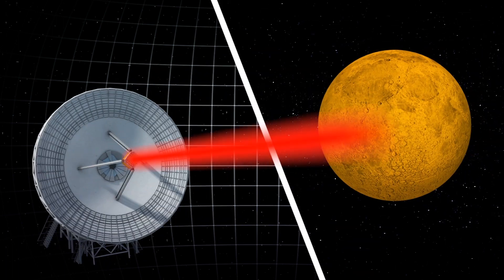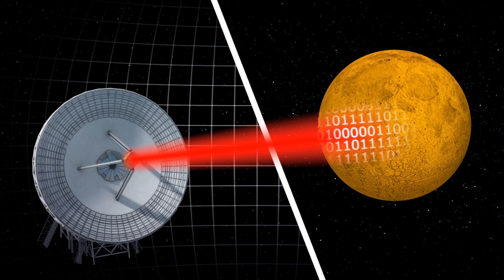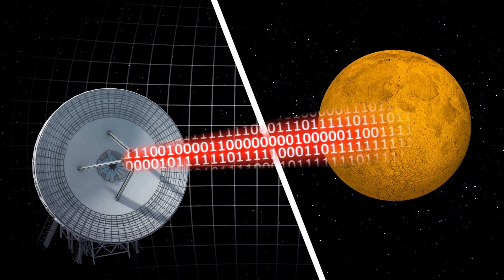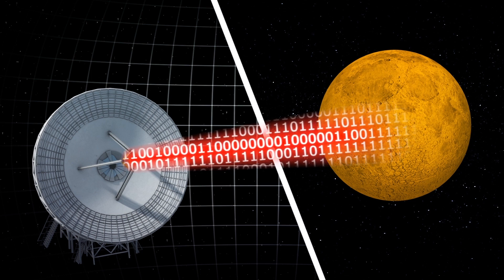According to Suzanne Dodd, director of the Interplanetary Network, which manages the Deep Space Network, lasers will be able to transmit roughly 10 times more data than radio antennas from Mars to Earth.